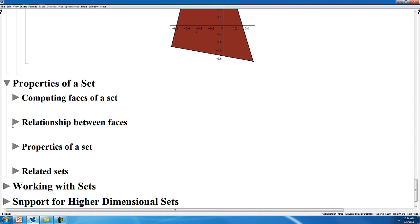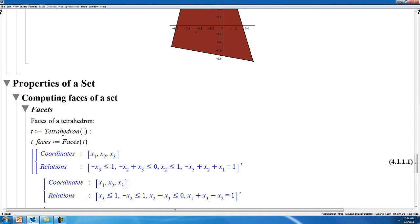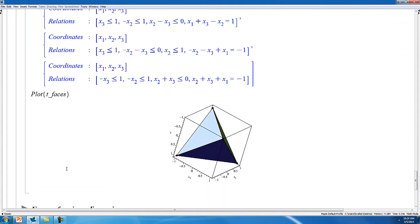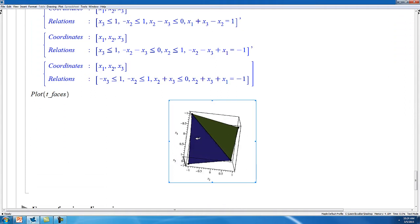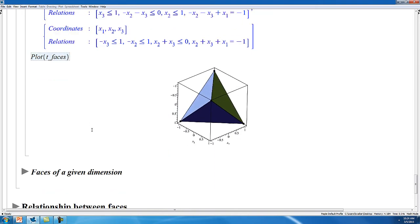You can also calculate various properties of a set. So for example, we can compute the facets of a tetrahedron. So computing all of its faces, we see that we get returned its one, two, three, four faces of the tetrahedron. Plotting these four faces, you can see that they're all rendered in different colors, so we can see which set is which and how they all form the tetrahedron when put together.